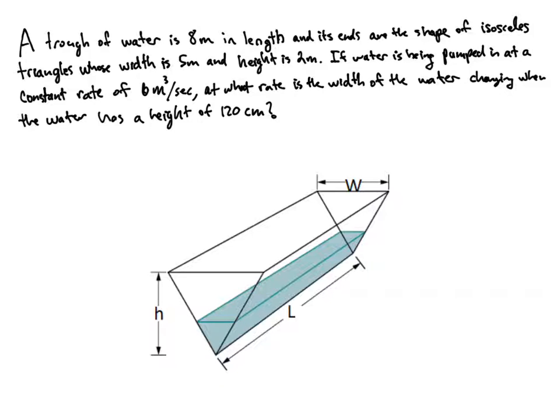To start, let's go through and identify all of the quantities that we know. So we have a trough of water that is 8 meters in length, so this is going to be 8 meters down here.